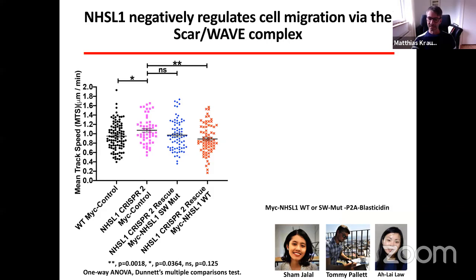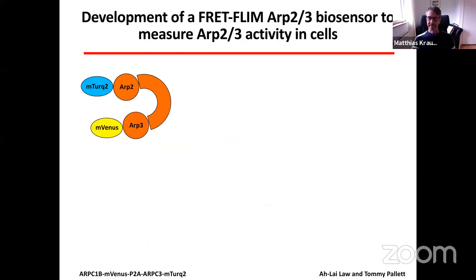Together with two PhD students, Sham and Tommy, we extended this work further. They plated control and NHS-like 1 knockout cells on laminin substrate, on which B16F1 cells migrate much faster, and again obtained the same result: NHS-like 1 knockout cells were significantly faster. They then attempted to rescue this phenotype in the knockout cells by re-expressing either wild-type NHS-like 1 or the SCAR/WAVE binding mutant, and observed that only wild-type — not the SCAR/WAVE binding mutant — rescued the phenotype.